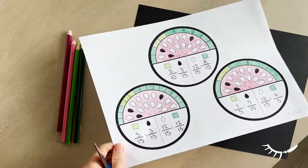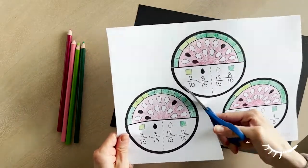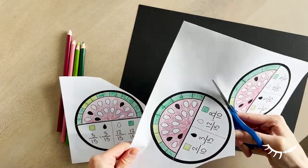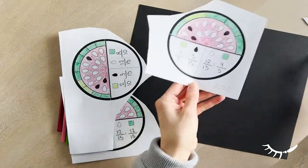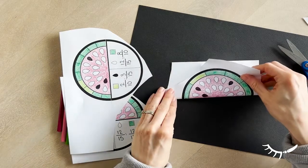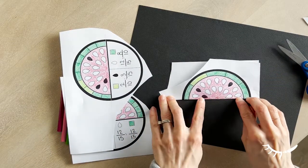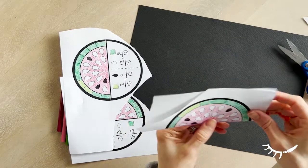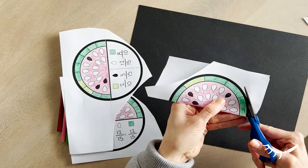To assemble the fraction garland, start by separating each of the three slices. Cut roughly around each of the circles. Next, fold along the dotted line. Hold the page up to the light to ensure it's lined up properly before cutting it out. Next, cut around each of the three slices.